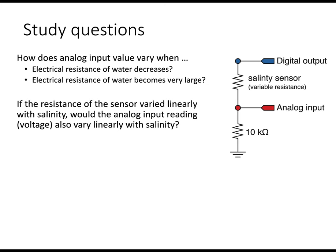So here's some questions. How does the analog input vary when the electrical resistance of the water decreases? So in this circuit to the right, when the resistance goes down, the voltage at the analog input gets closer to the voltage of the supply, the digital output, 5 volts.